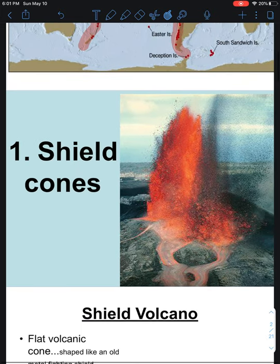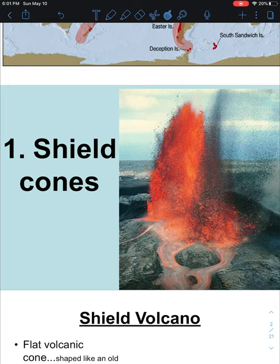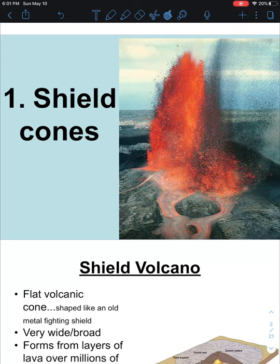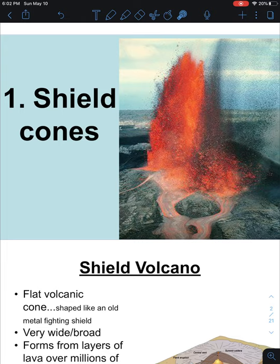Our very first volcano type is called the Shield Volcano, and we will be drawing a side view picture of what a Shield Volcano looks like. In this picture we can see a volcanic fountain shooting magma out onto the earth's surface, producing lava. You'll notice that lava churning into little black rocks — this rock is called scoria, and it looks like it's been scorched when you hold it in your hand. As the lava flows it eventually cools off and turns into basalt, which is another one of the black rocks from our igneous rock lab.